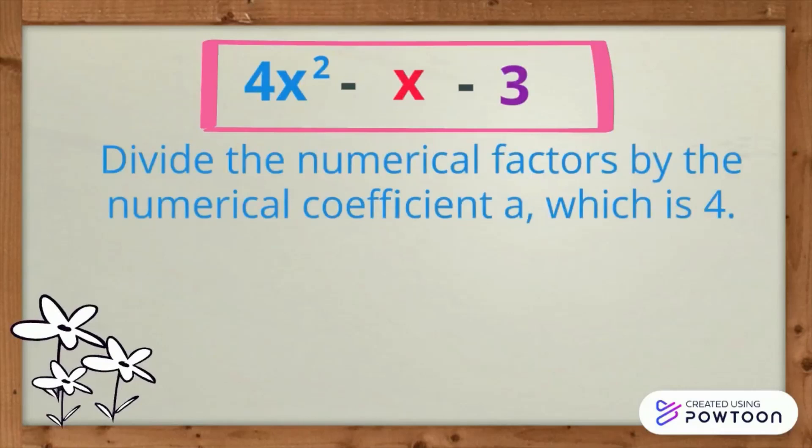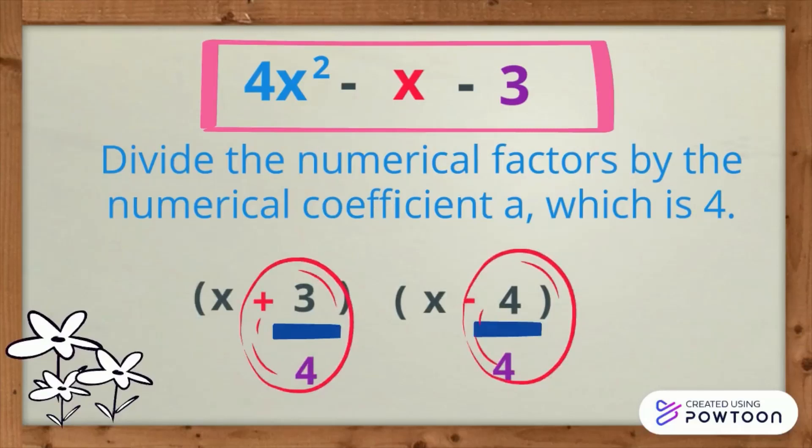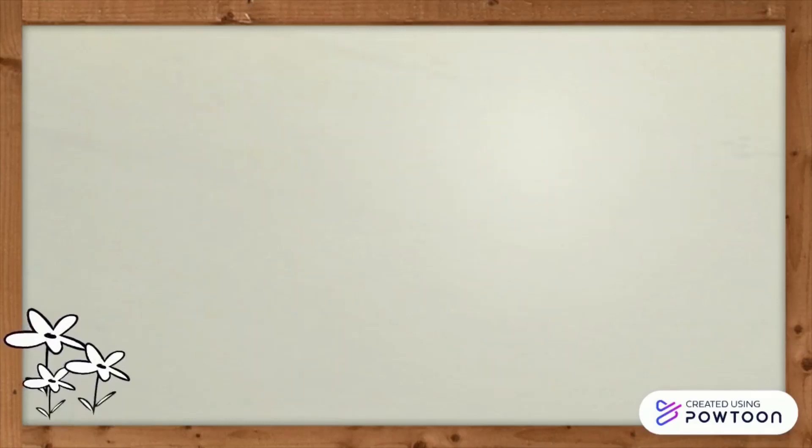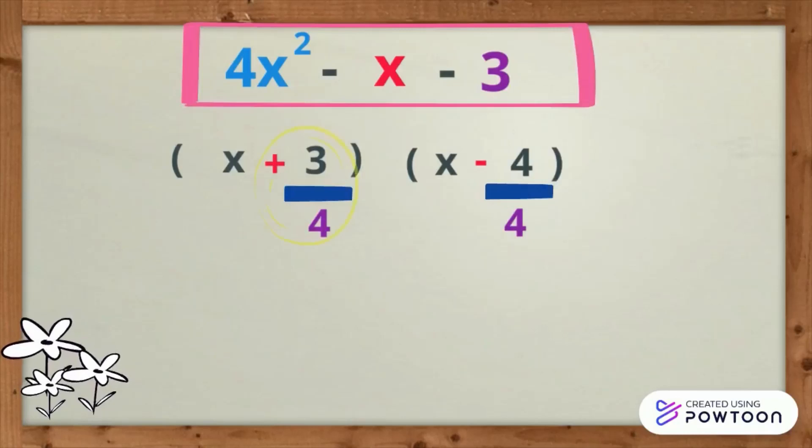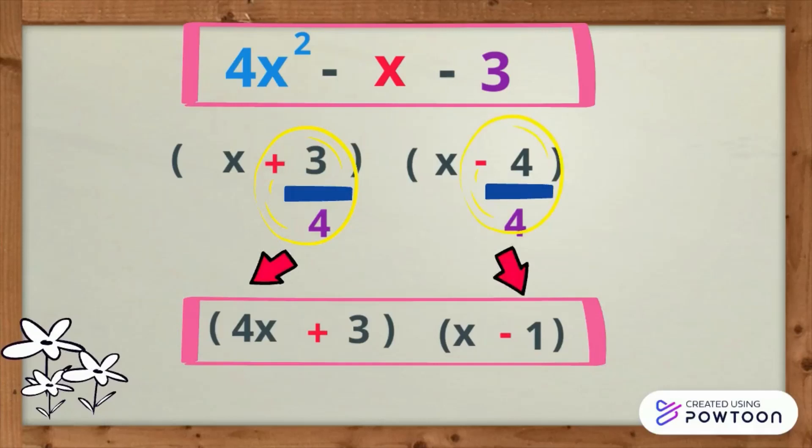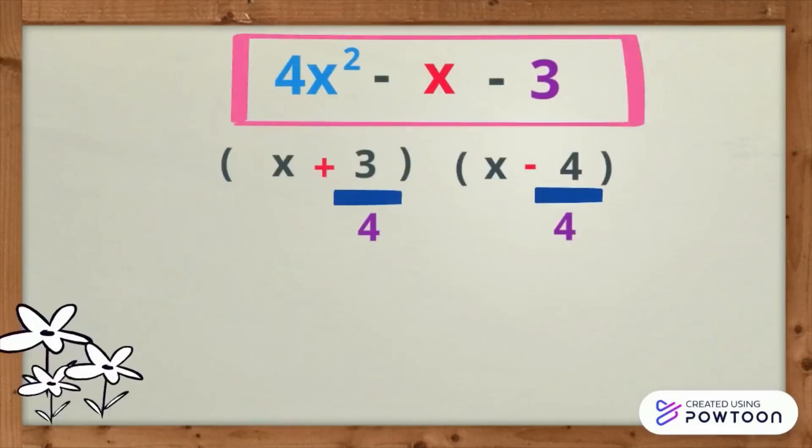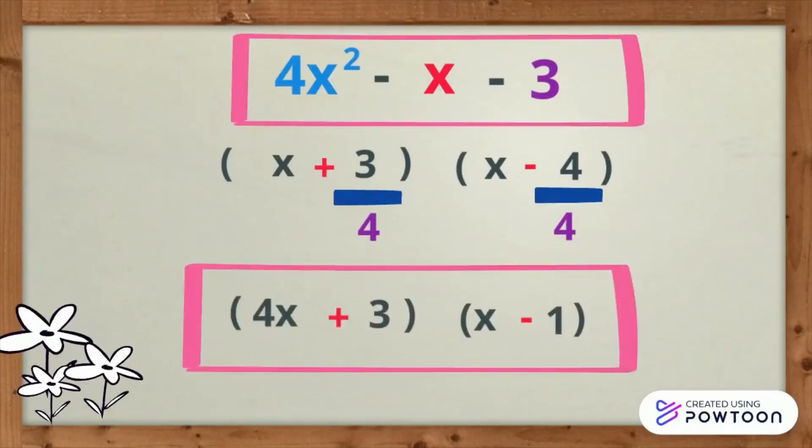Take a look as we divide the numerical factors by the numerical coefficient a, which is 4. Positive 3 divided by 4. Negative 4 divided by 4 is negative 1. The complete factors of 4x squared minus x minus 3 are the quantity 4x plus 3 times the quantity x minus 1.